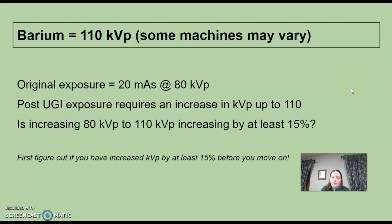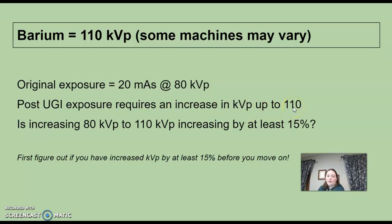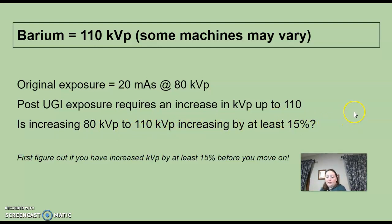It depends on what you're using. Our original exposure — the KUB with no barium — was 20 mAs at 80 KVP. Post-upper GI, we have to increase our KVP up to 110 because we have barium and we have to penetrate that. So is increasing from 80 KVP up to 110 an increase of at least 15%? We have to figure that out first.